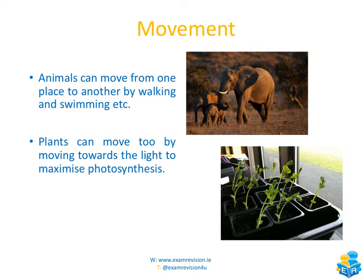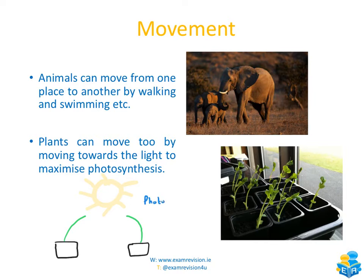If we had a sun with two plants underneath it, both of those plants are going to bend in the direction of the sunlight — one plant would bend this way, and the other plant would bend up this way. All of that together is a plant response called phototropism. So even though it mightn't look like it, plants too can actually move, which means they're a living thing.